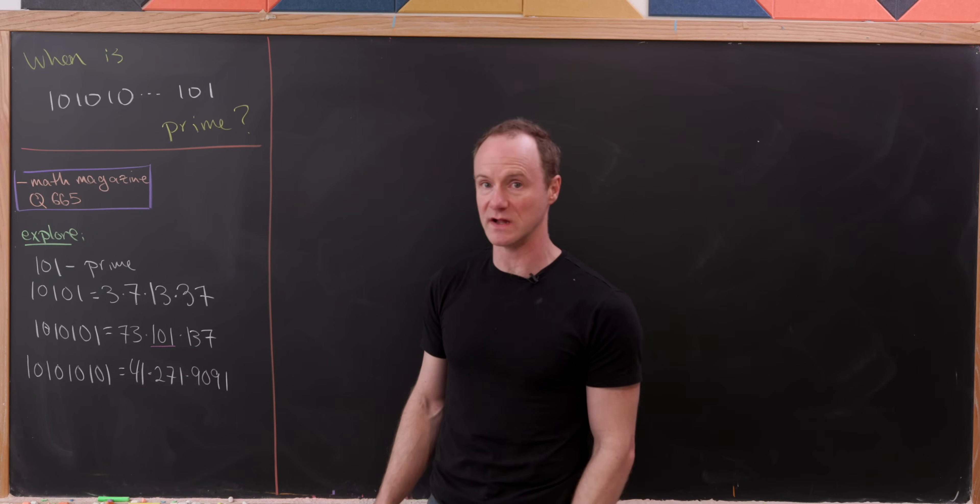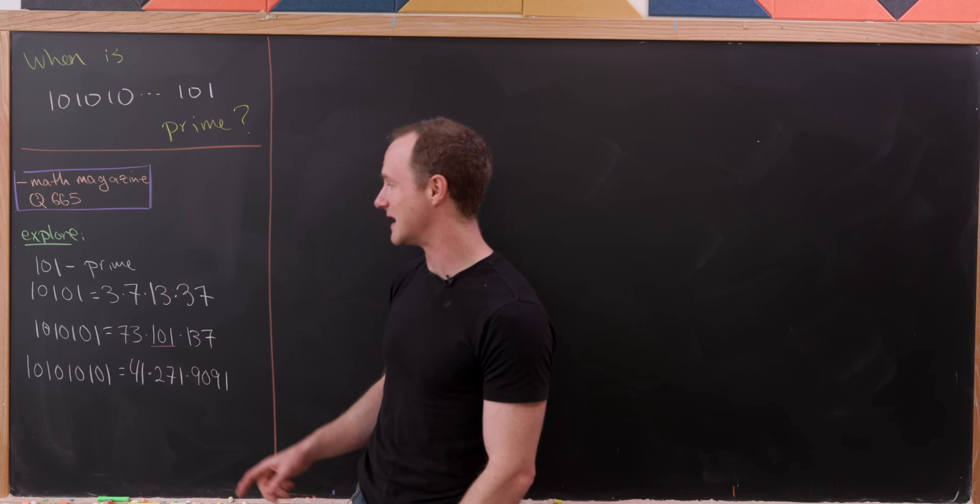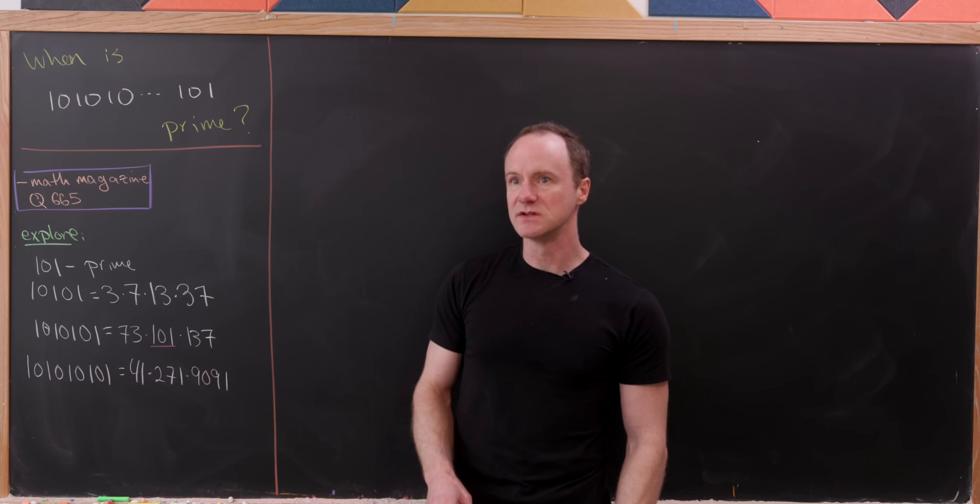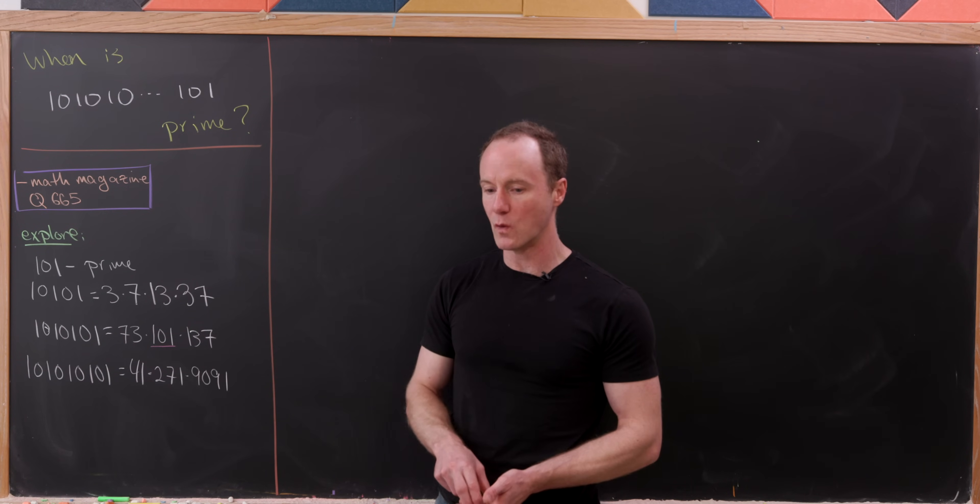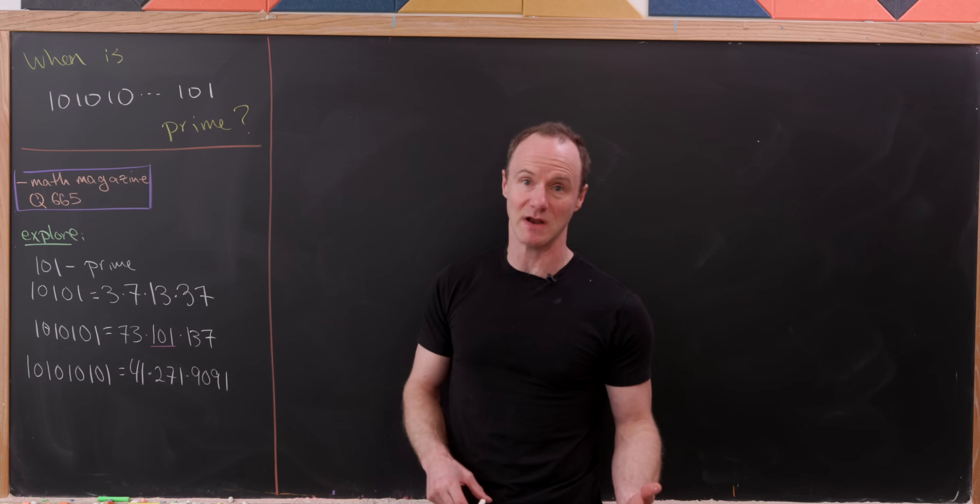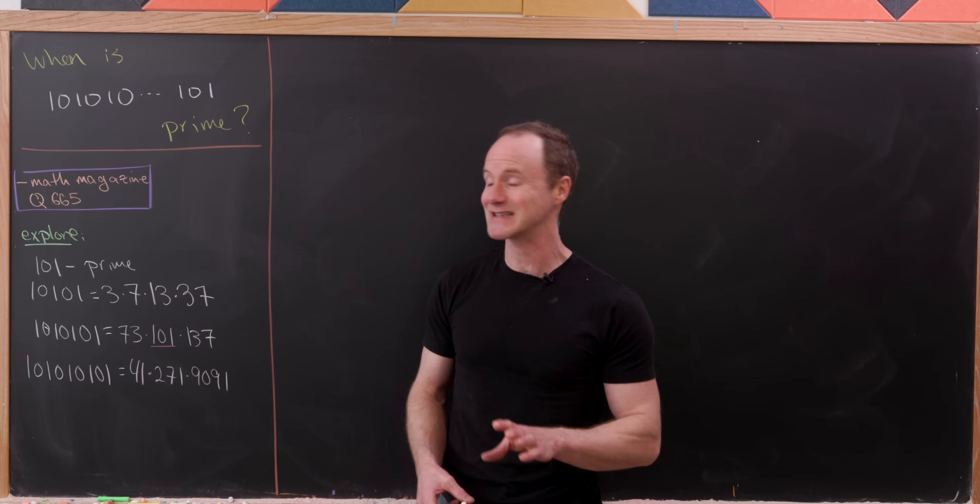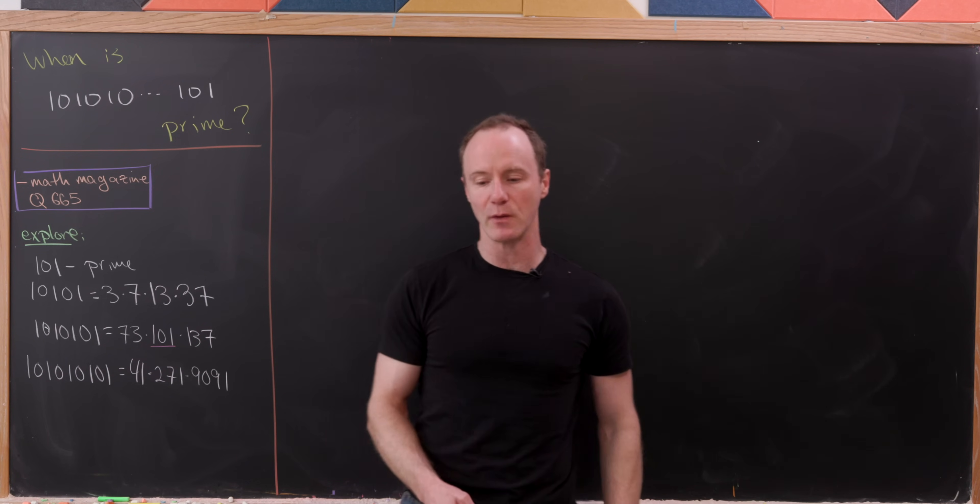And then if we add another 10 to the beginning, it's again not prime. And so I think we're beginning to believe that maybe 101 is the only prime number in this list. And in fact, it is. And let's see how we can show it.